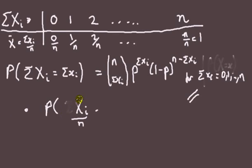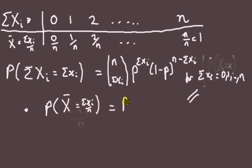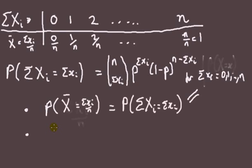Notation is very important when simplifying. The probability of seeing x-bar equal to little x_i over n is the same as the probability that the sum of x_i equals a particular value. Seeing x-bar equal to one of those values is the same as looking at the sum of x_i equal to n times that value. And we know the sum of x_i has the probability mass function of a binomial.